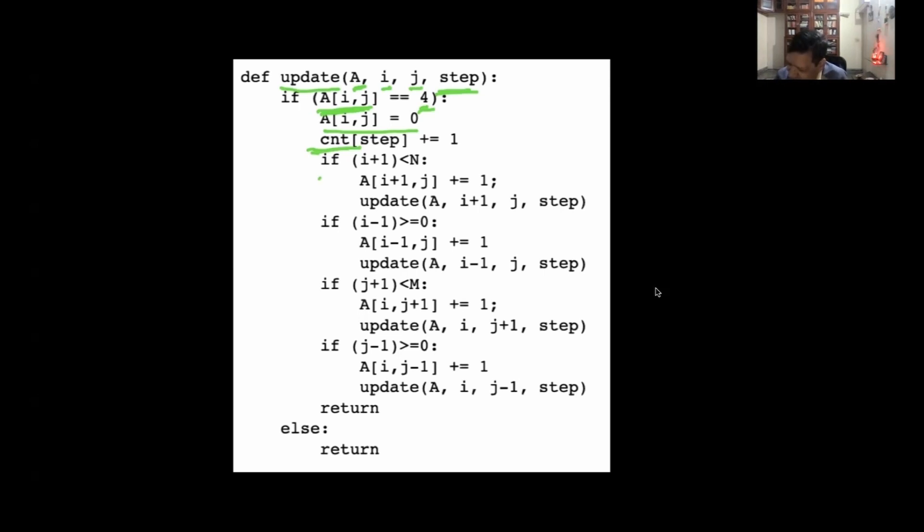If the number of sand at i,j is four, then it becomes zero and distributes to its four neighbors. Count will be the number of avalanches. If i+1 is less than n, meaning this is the right neighbor, and it's not at the edge, I will update this site.